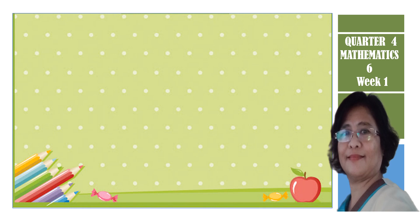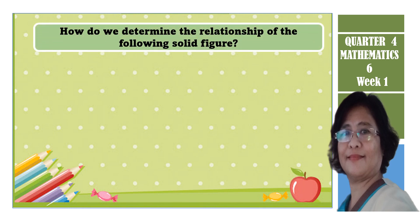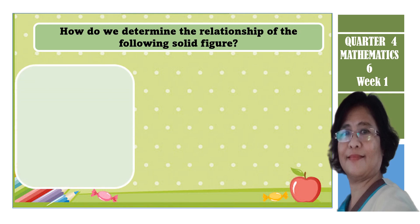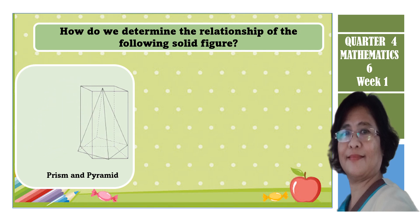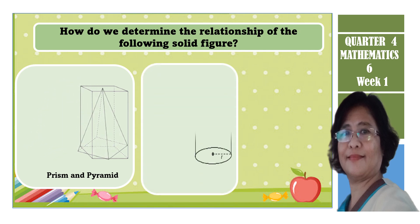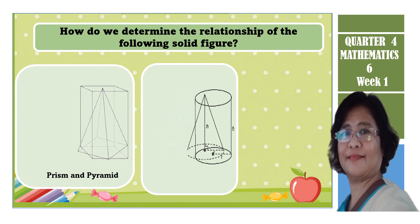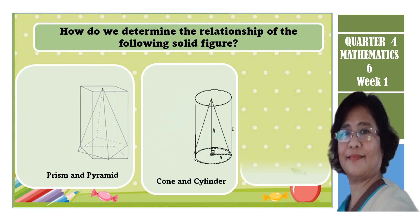How do we determine the relationship of solid figures? How is a pyramid related to a prism if the base and the height of the pyramid are the same? How is the cone related to the cylinder in terms of volume? And how is the sphere related to the cylinder?